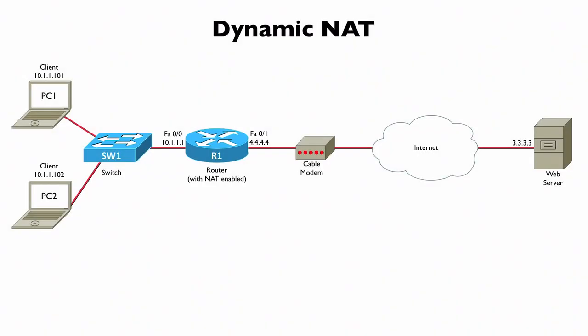With static NAT we could make sure that a specific inside local address always got mapped to the very same inside global address, but that's not very scalable. If we have to administratively configure every single IP address inside our network, what we might want to do if we had a lot of inside local addresses that needed to go out to the outside is group them together and let them select from a pool of available inside global addresses.